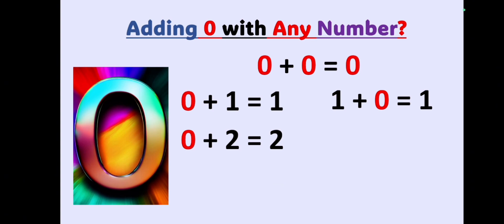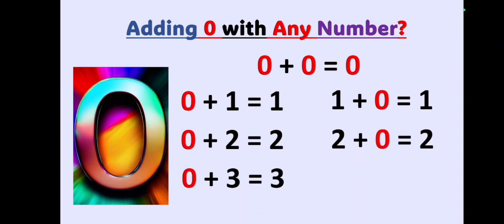Zero plus two equals two, and two plus zero equals two. Zero plus three equals three, and three plus zero equals three. Similarly, if you add zero to five, six, seven, eight, or nine — whether zero is first or in the second place — you will get the same result. Now let's move on to today's class.